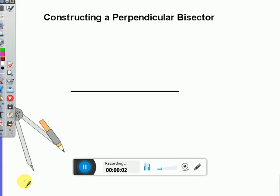In this video we are going to construct a perpendicular bisector to a line. We have our line here that's not labeled,